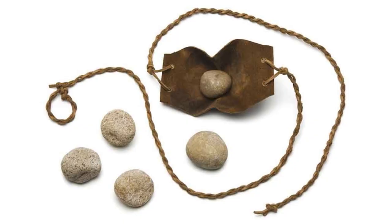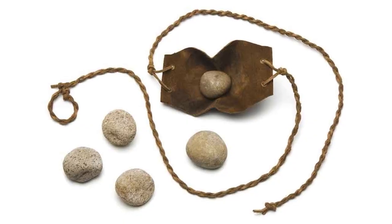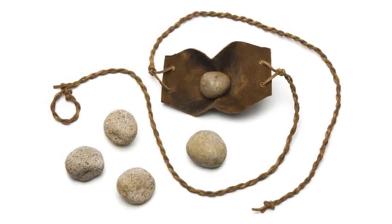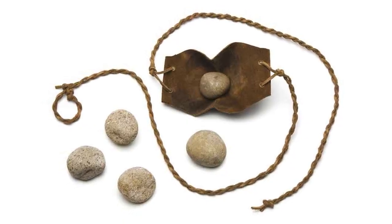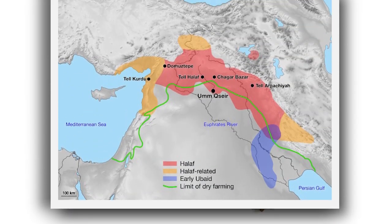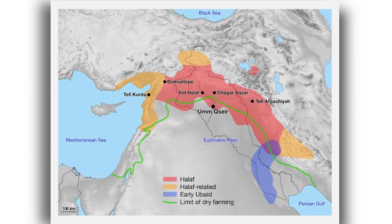Sling bullets, although common, were likely used for hunting purposes as well. The Halaf culture co-existed with the Ubaid culture, the fourth and most successful Neolithic culture, for approximately a millennium, before eventually being absorbed by them.